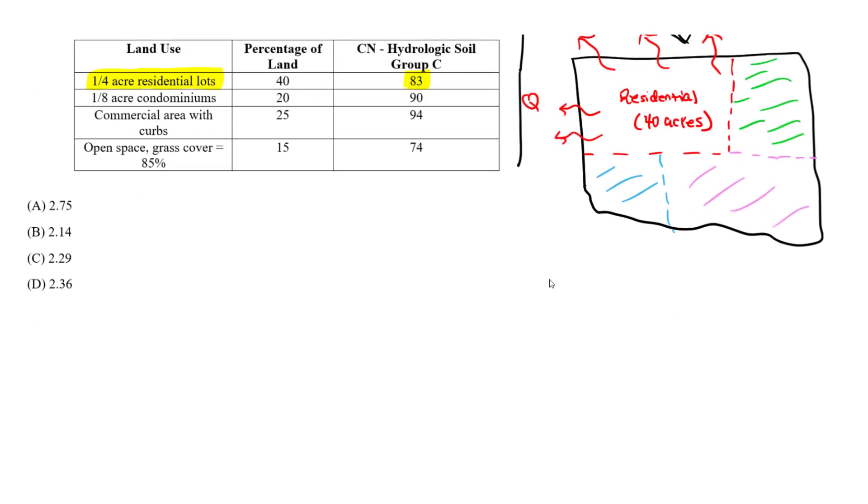So let's do that. But let's first find S. So if I write the equation, we know S is going to equal to 1,000, the curve number minus 10. So S, the basin size, giving 1,000, the curve number is going to be 83. So we use 83, which was this for residential, minus 10.